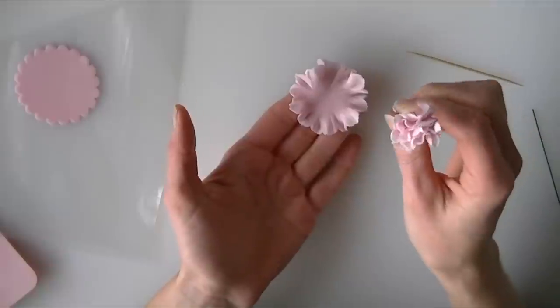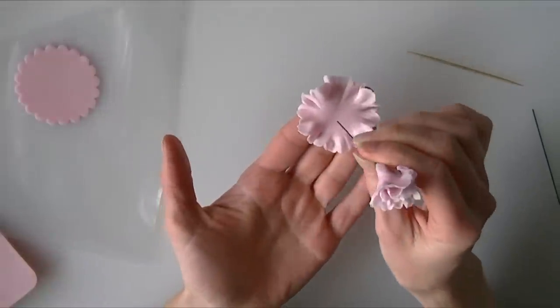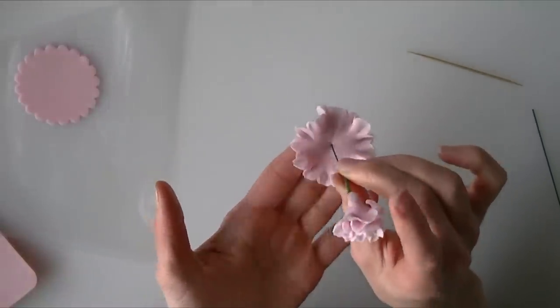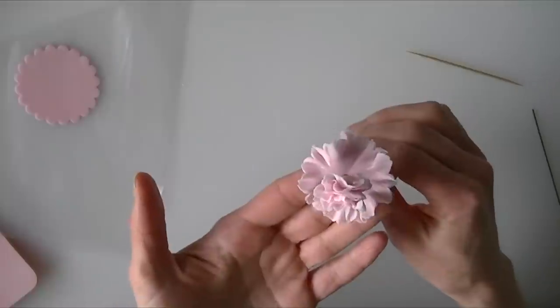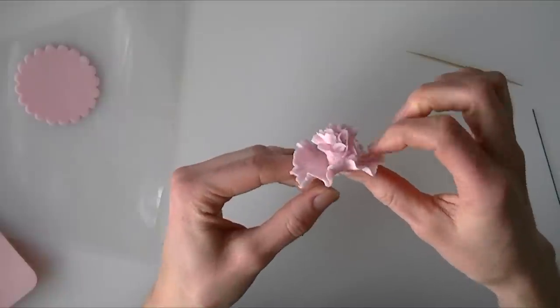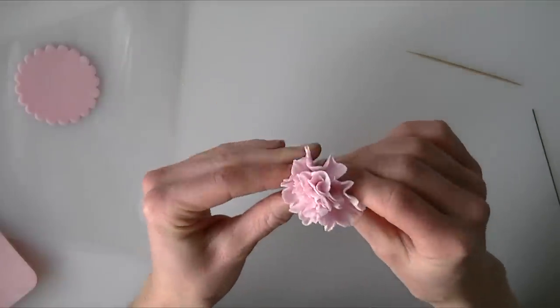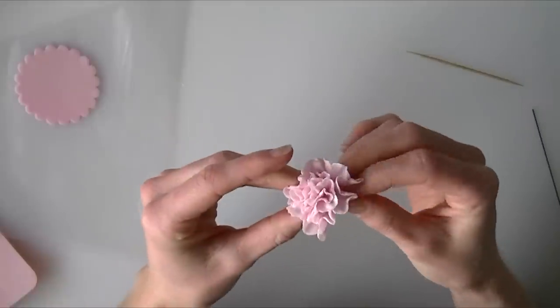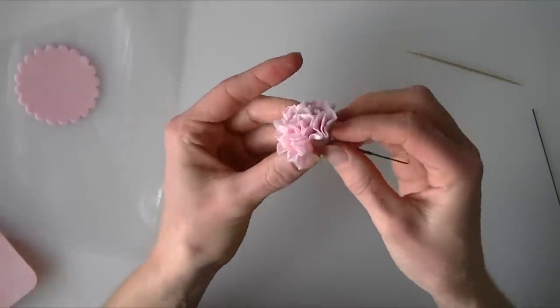So again we are going to put a bit of water all in the center of that petal. So I am taking one that has started to firm up a bit now. And again I am going to push that through the center and I am going to pull these up onto here. So it is about level with the other ones. I am just going to push that in all the way round.